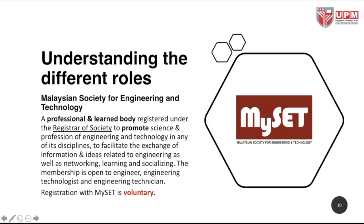Next, MySAT — the Malaysian Society for Engineering and Technology — was established in 2008. Its office is at the Faculty of Engineering, University Putra Malaysia. MySAT is a professional and learned body registered under the Registrar of Society (ROS), and its purpose is to promote the science and profession of engineering and technology. It covers the entire engineering community — engineers, engineering technologists, technicians, allied professionals like architects and surveyors. Registration with MySAT is voluntary.